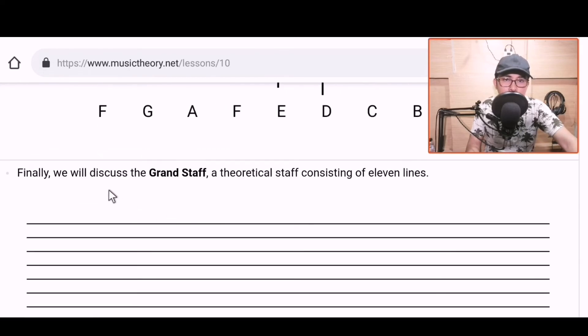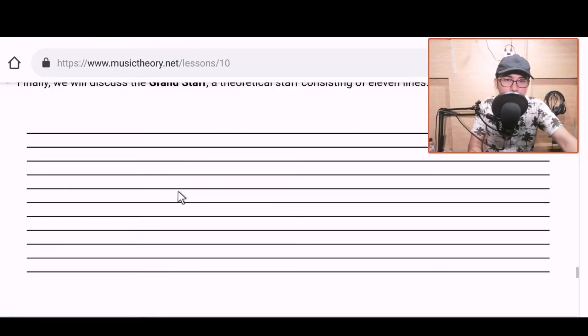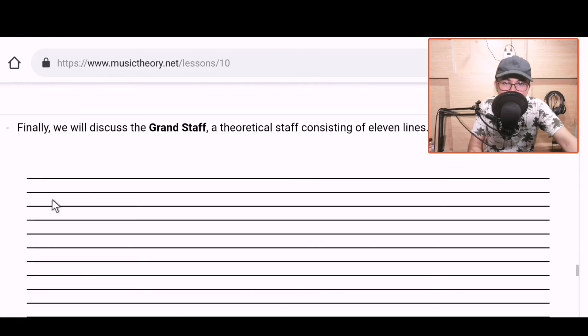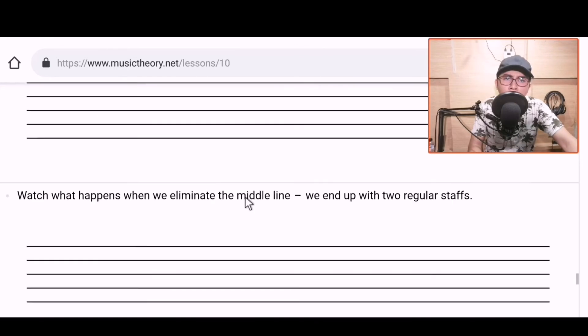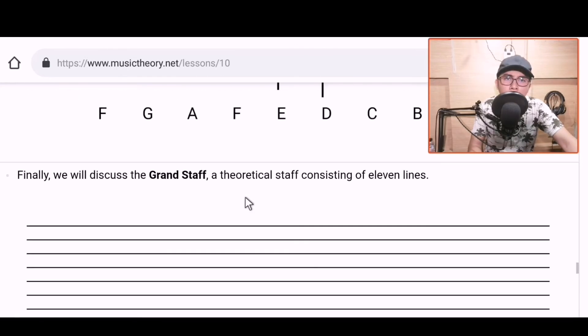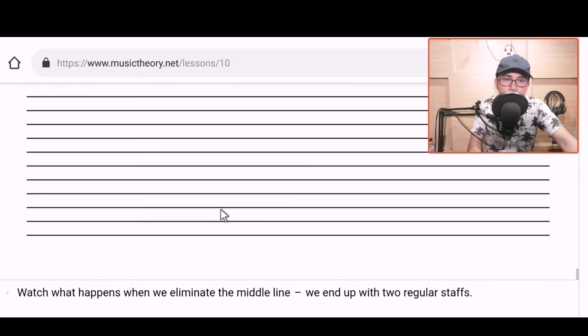Next. Finally, we will discuss the grand staff. This is it. For the piano players or pianists out there, this is called the grand staff. They're close together here, but we'll separate them later. A theoretical staff consisting of 11 lines. Okay. So it says here a theoretical staff consisting of 11 lines. Theoretical meaning it's not commonly used, it's just a theory.